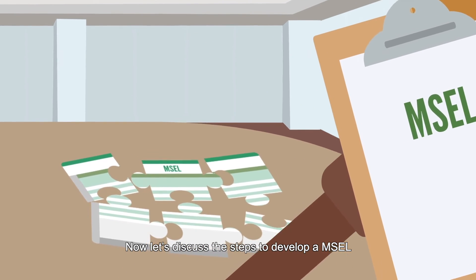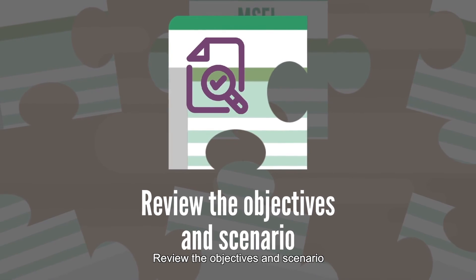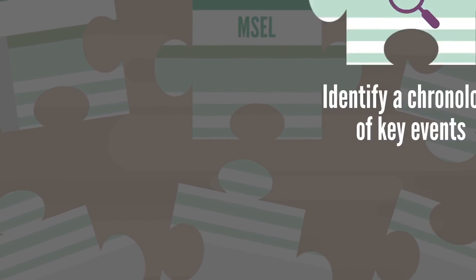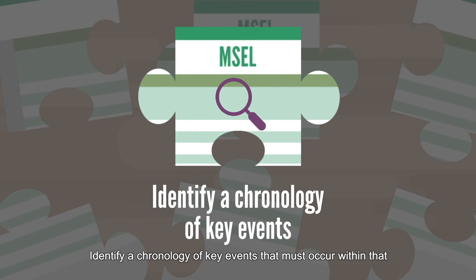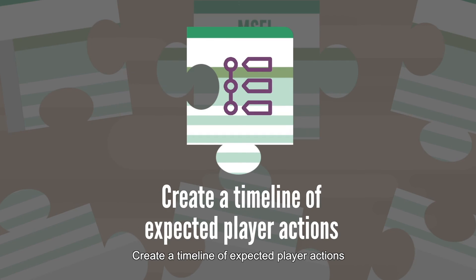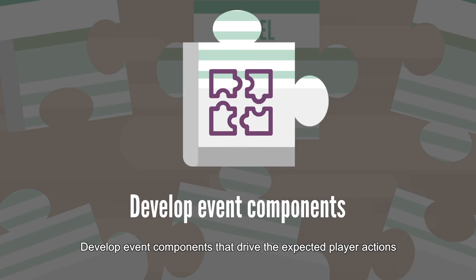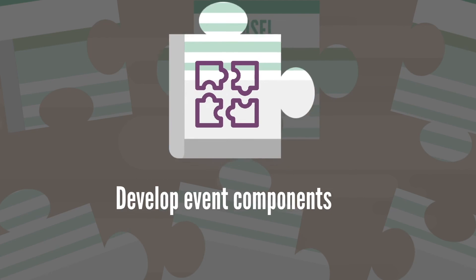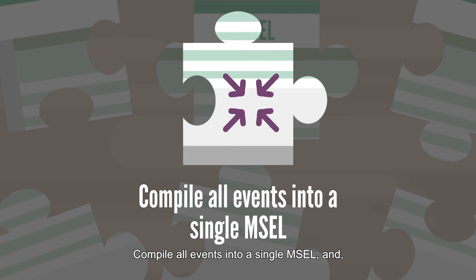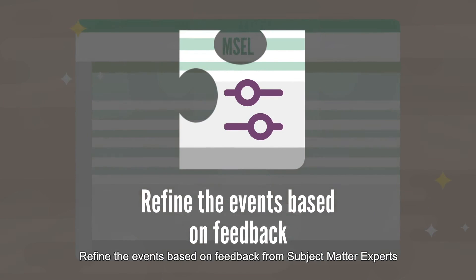When developing a MEASL, the exercise planning team should review the objectives and scenario, identify a chronology of key events that must occur within that scenario in order to evaluate the objectives, create a timeline of expected player actions, develop event components that drive the expected player actions, compile all events into a single MEASL, and refine the events based on feedback from subject matter experts.